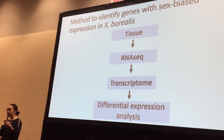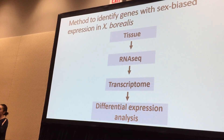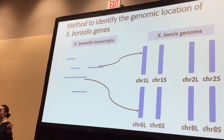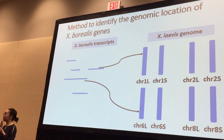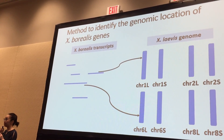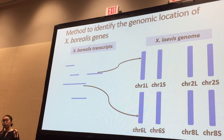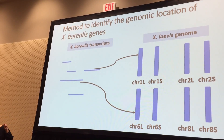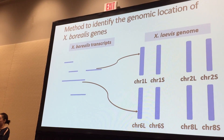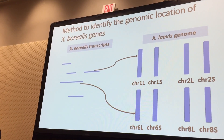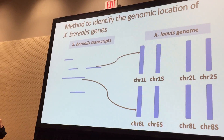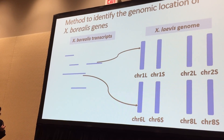We also wanted to know where those genes are located in the genome. Unfortunately, we don't have a well-annotated borealis genome, but we do have a high-quality genome from a closely related species, Xenopus tropicalis, which we used as a reference genome. We mapped the borealis transcripts to this genome to find out the genomic locations of borealis genes. At this stage, we know whether a gene is sex-biased and its genomic location, so we can look at the distribution of those sex-biased genes across the genome.